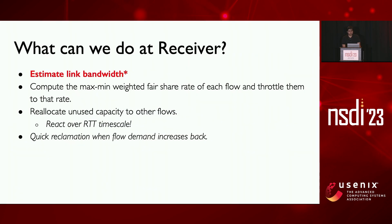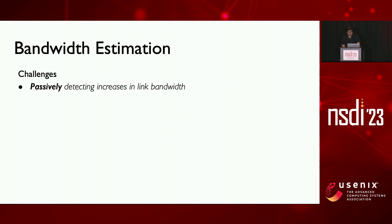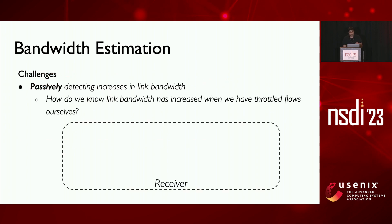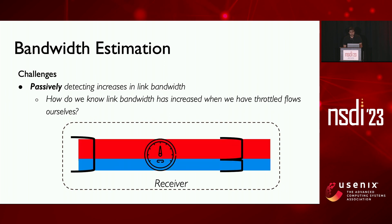But let's go back to our big assumption: all of this works only if we're able to estimate link bandwidth to a reasonable extent. But how do we do that? We can infer link bandwidth similarly to flow demands by monitoring incoming traffic, but this is not as straightforward. Detecting increases in link bandwidth is challenging since we are throttling flows ourselves — we cannot really detect increases by measuring incoming traffic's rate, since it's not going to increase because we have throttled the flows ourselves.